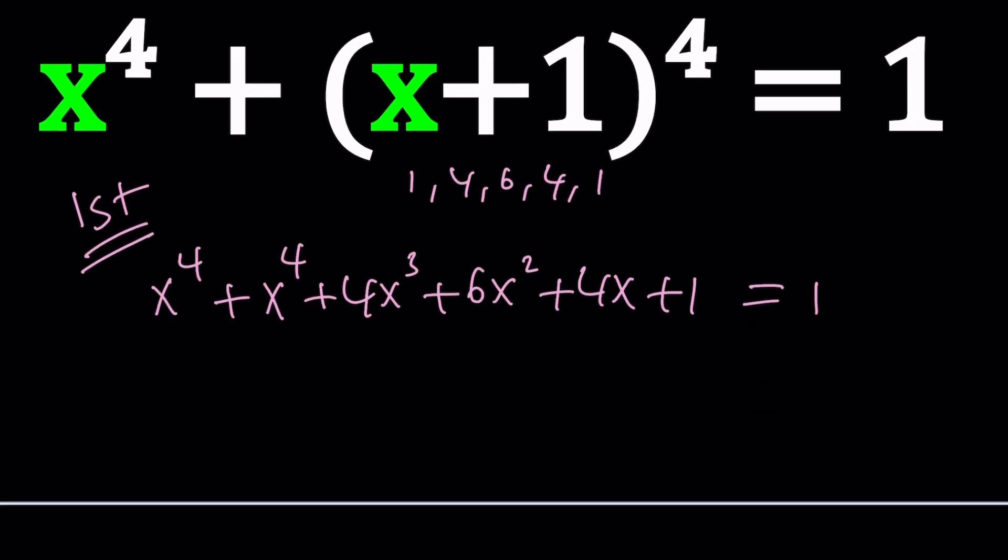It's good to have one on both sides, right? Because that's going to cancel out. Now let's go ahead and cancel that out and proceed with the rest. This is going to give us two x to the fourth plus four x cubed plus six x squared plus four x equals zero.